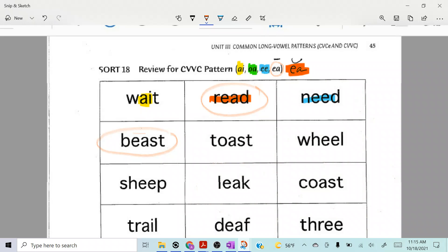How about toast? Toast, what color is that going to get? Yes, sweetheart. That's going to be green. Okay, how about wheel? Anya, what color would wheel get?